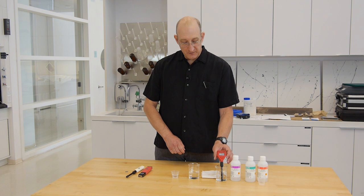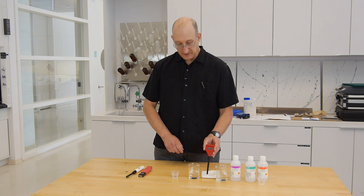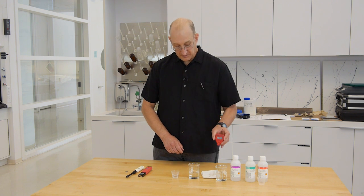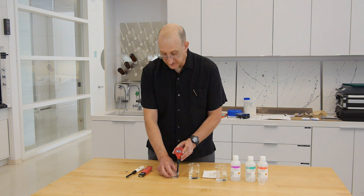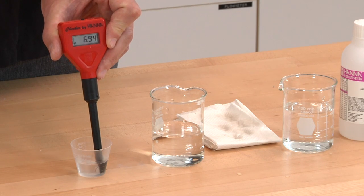To make the measurement of calibration, we want to take the electrode, the meter, out of the tap water, blot, rinse in the deionized or distilled water, blot, and go into our calibration solution. We want to wait for the meter, the reading, to stabilize.